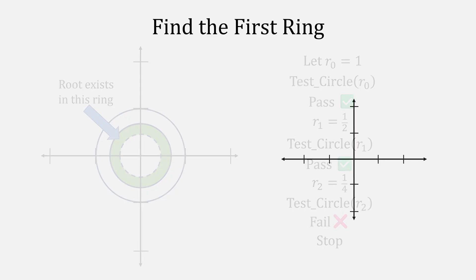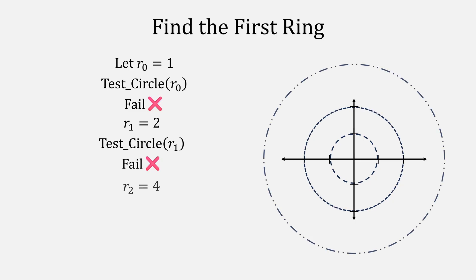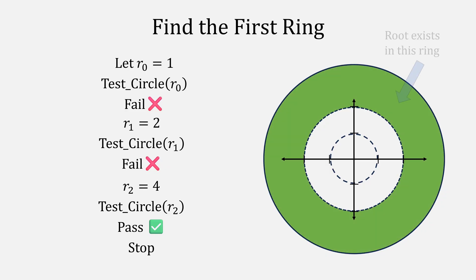Let's try another scenario. In this case, we again start with the unit circle. And when we run test circle, this failed the test. That means we can draw our circle with a dashed line. Afterwards, double our radius to come up with a new circle to test. This time it also failed. Draw with a dashed line and double the radius to this time four. Run test circle and hypothetically, let's say this one passes. We'll then draw it with a solid line and we can stop. We found a ring that contains our root.